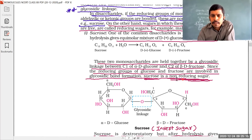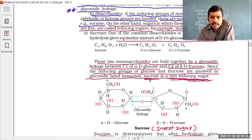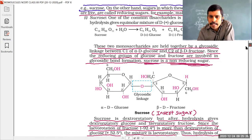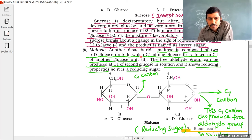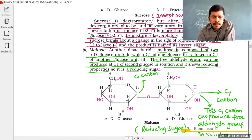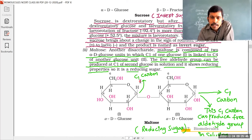Maltose is the second disaccharide. It contains two alpha-D-glucose units linked with a C1-C4 glycosidic linkage. At the C1 carbon of the first alpha-D-glucose there is no free aldehyde group, but when maltose undergoes hydrolysis, the resulting alpha-D-glucose units have hemiacetal forms that can regenerate free aldehyde groups.